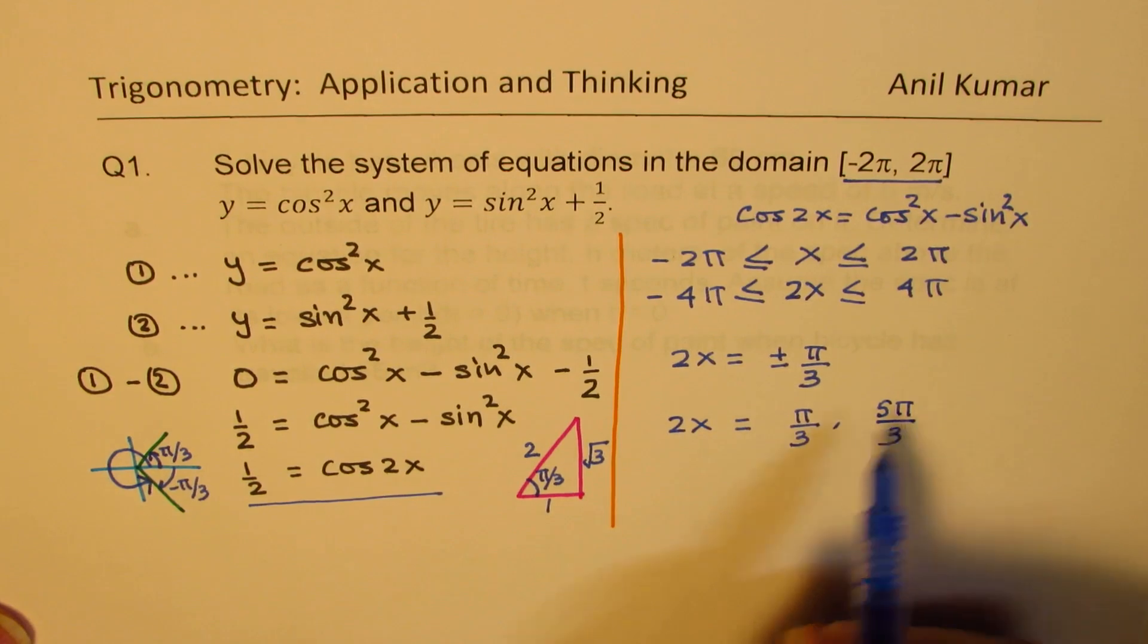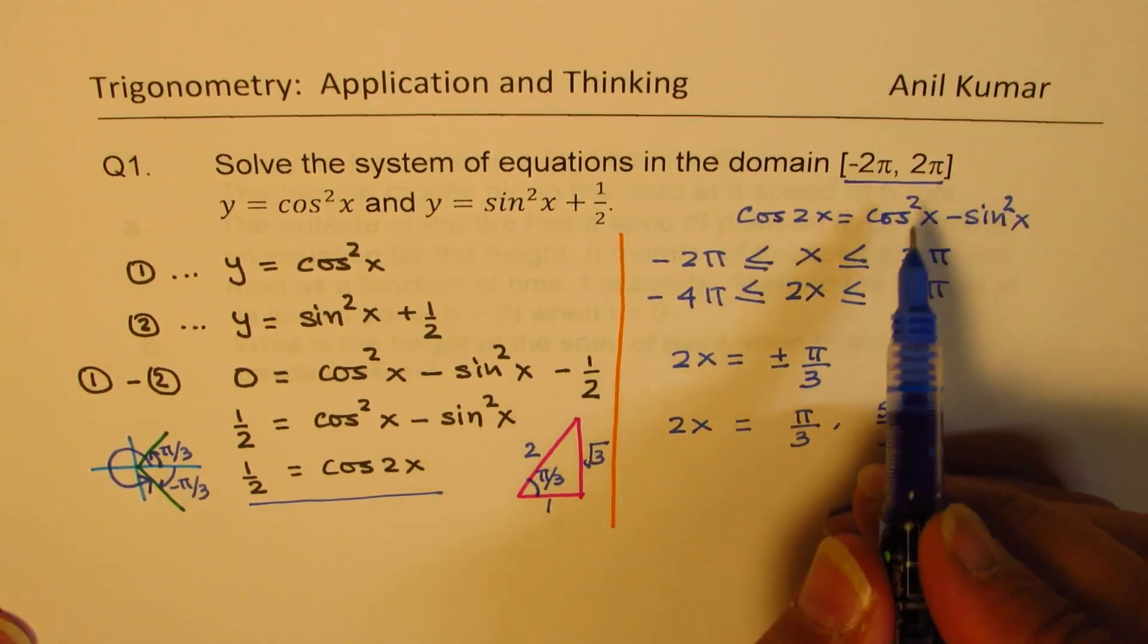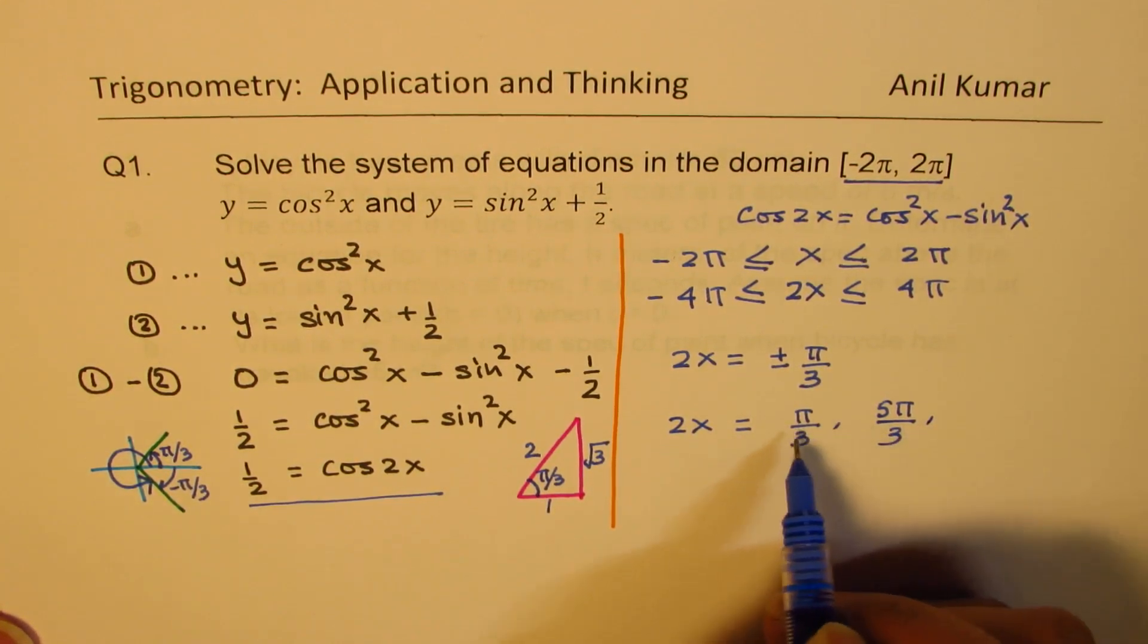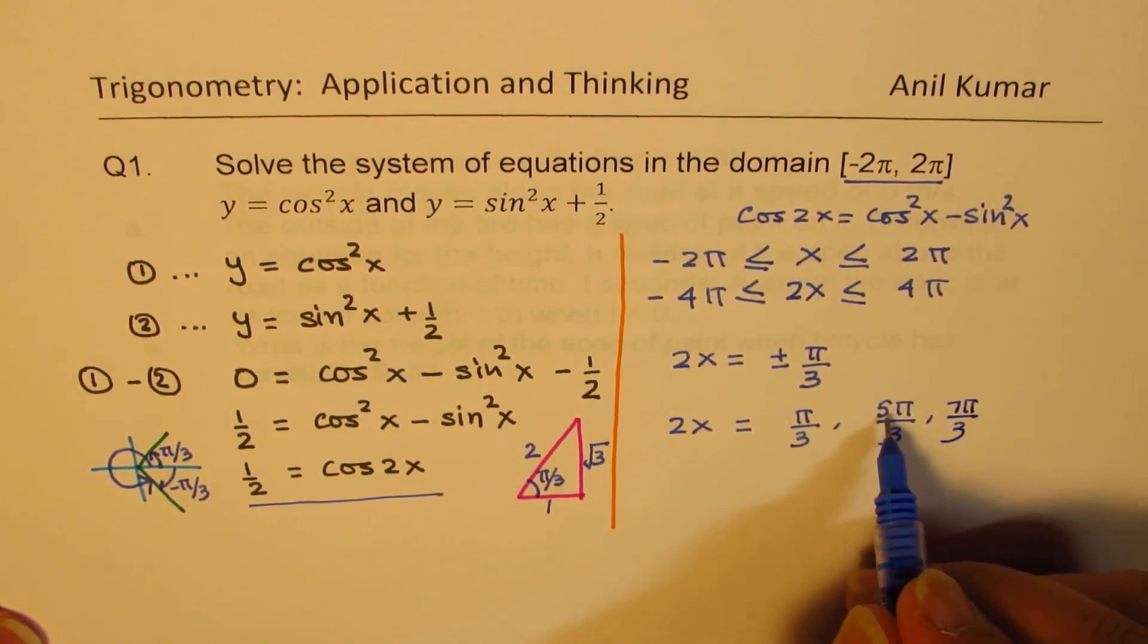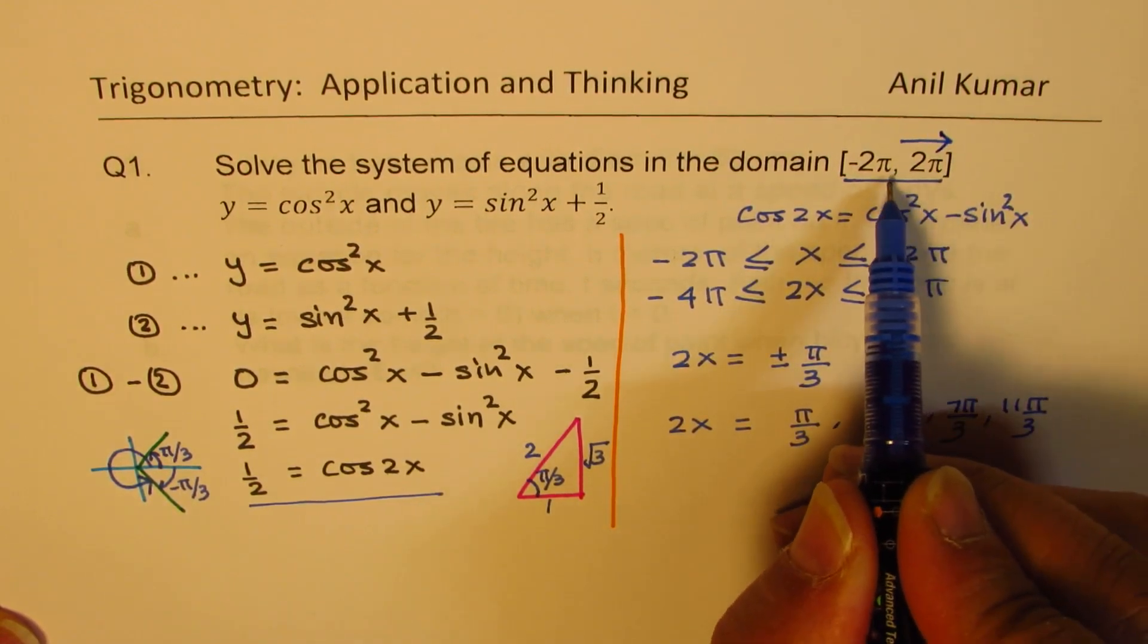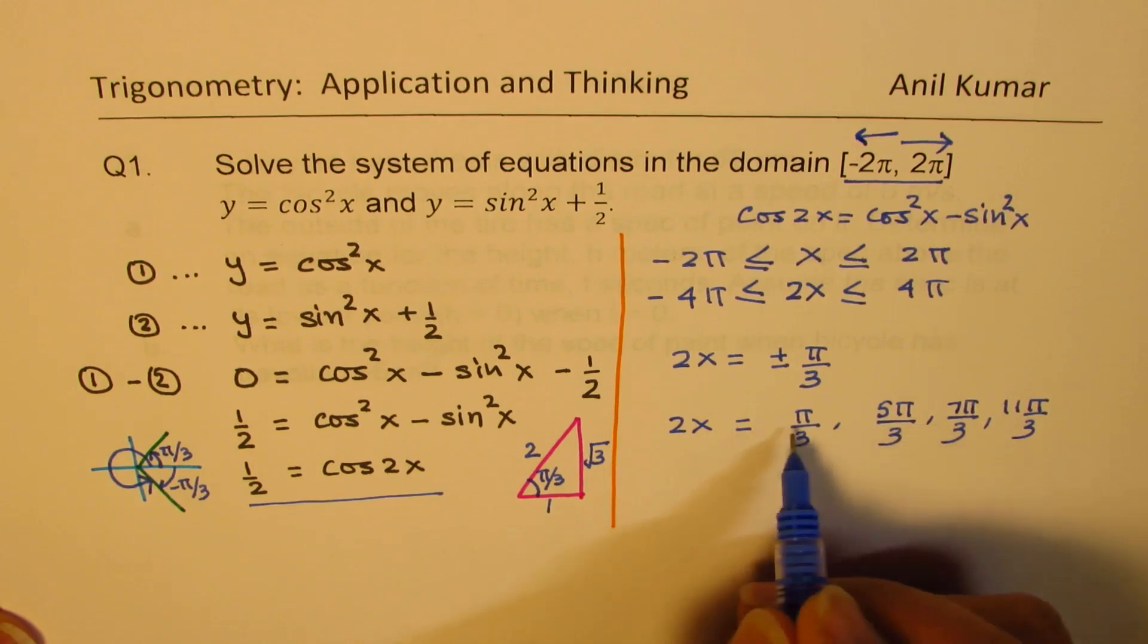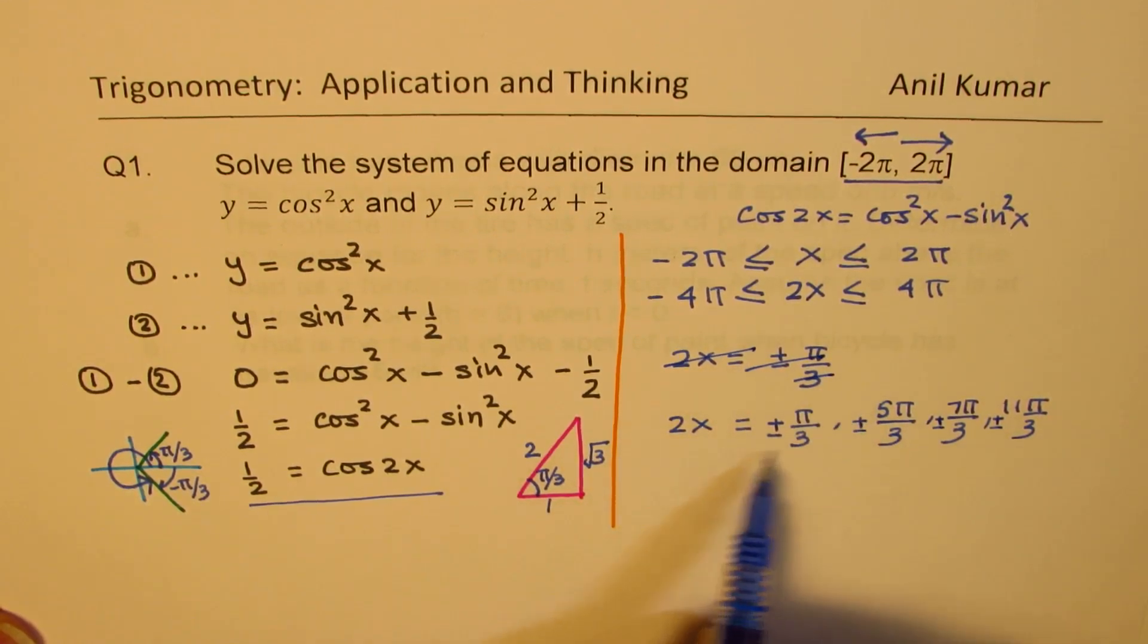Now this solution is when we are going in this direction from 0 to 2π. If I have to go to 4π, I have to add 2π. Adding 2π means 6π by 3, so we get 7π by 3, and 6 plus 5 gives you 11π by 3. We get these two also, and that is when we are going in this direction from 0 to 2π. When we cover in that direction also, then we get minus of these. So instead of working like that, we'll work like this.